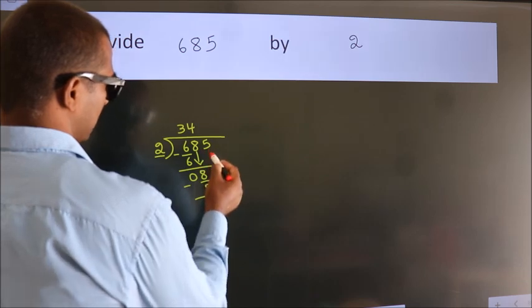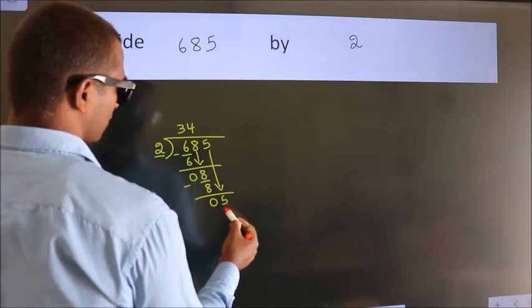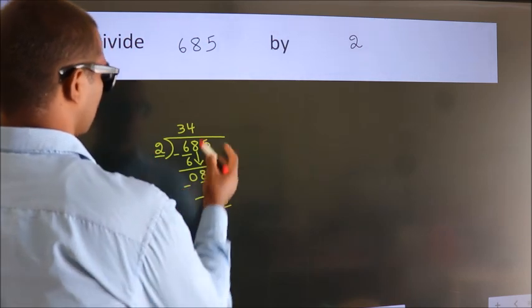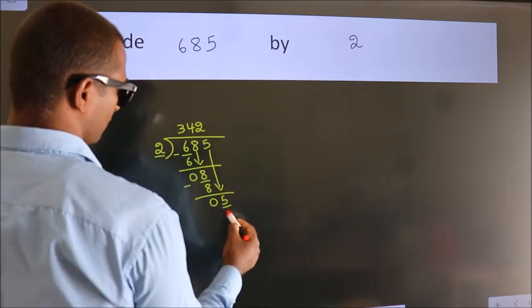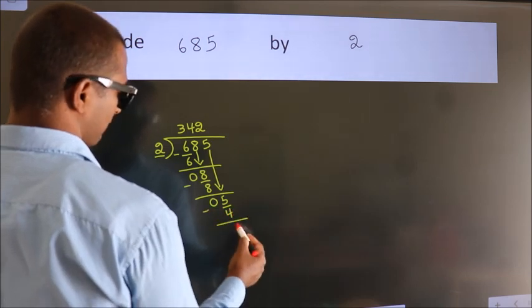After this, bring down the beside number. So 5 down. A number close to 5 in the 2 table is 2 twos, which is 4. Now we subtract. We get 1.